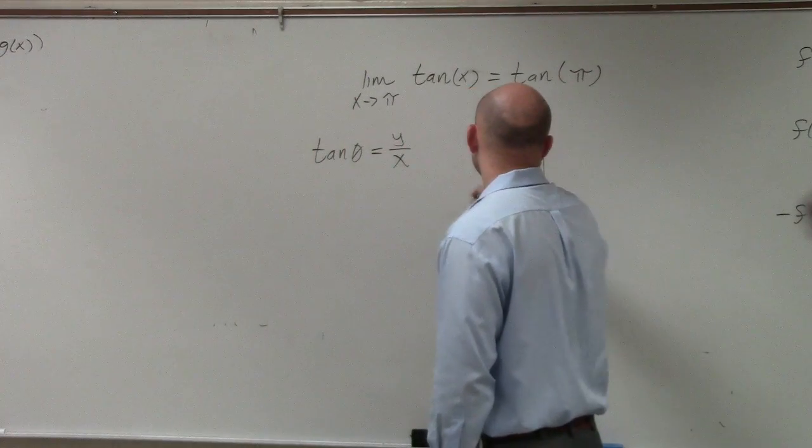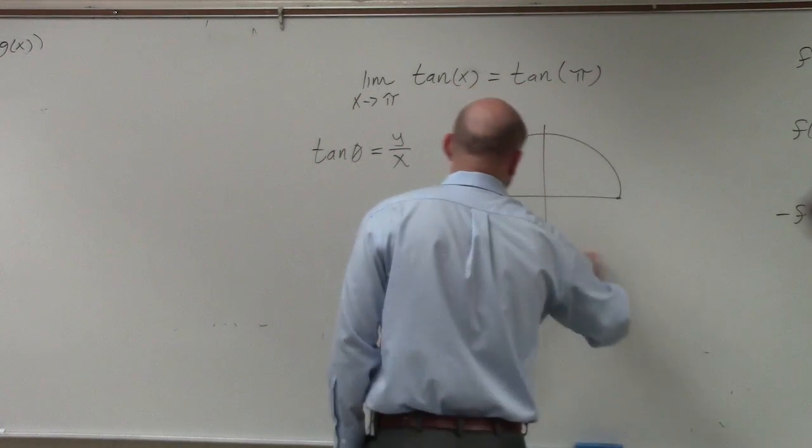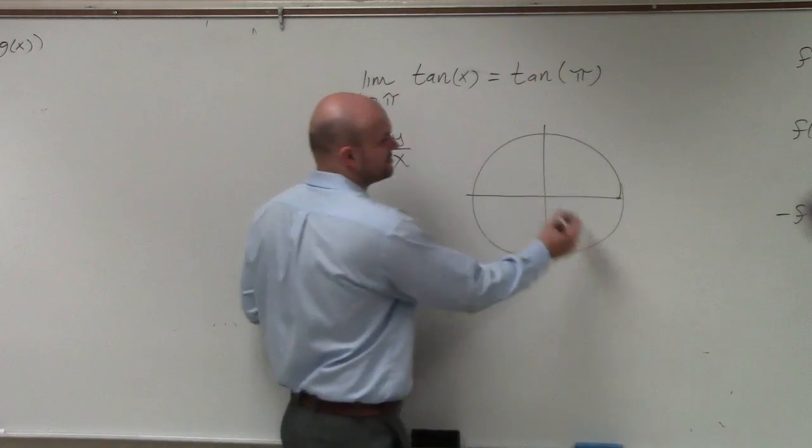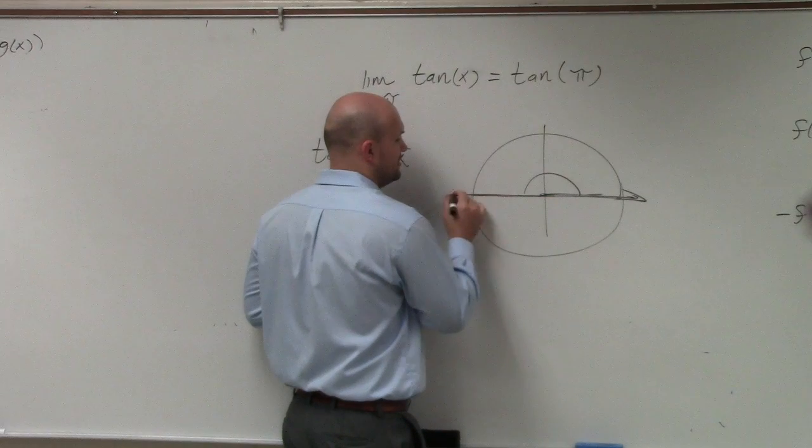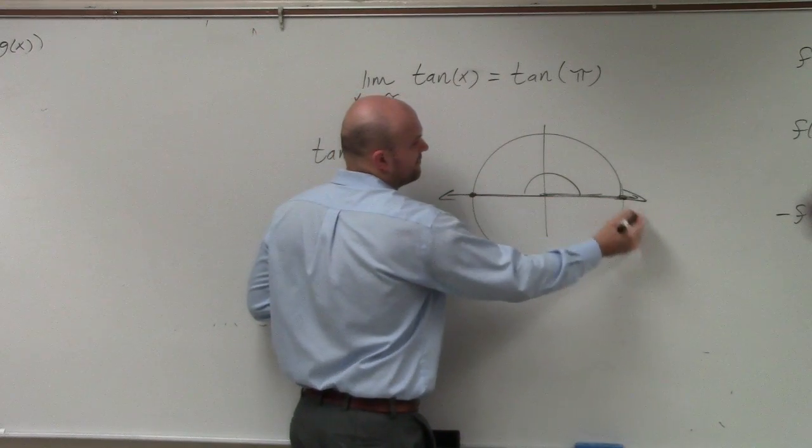So if we look at the unit circle and we look at the angle pi, starting at our standard position, pi is going to be over here. Here, upon the unit circle, is 1, 0.